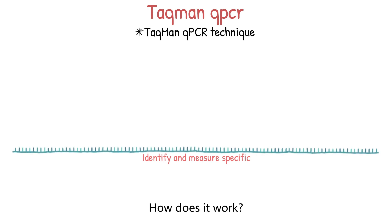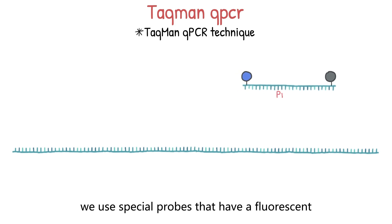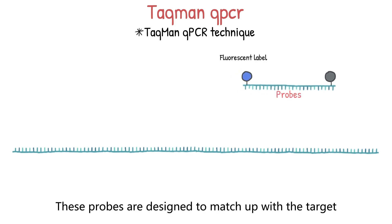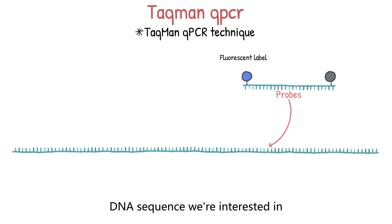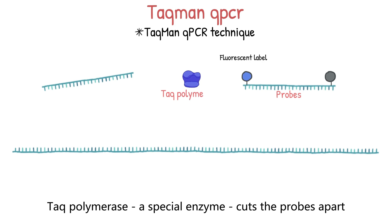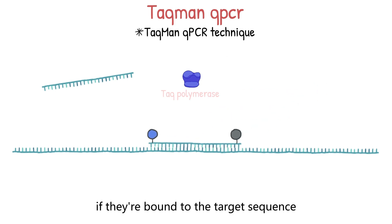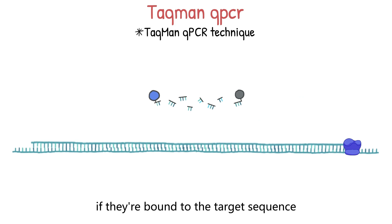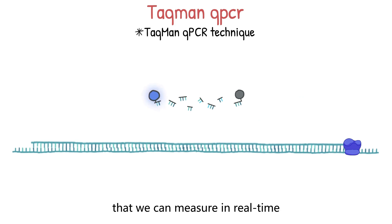How does it work? Well, we use special probes that have a fluorescent label attached to them. These probes are designed to match up with the target DNA sequence we're interested in. During amplification, Taq Polymerase, a special enzyme, cuts the probes apart if they're bound to the target sequence.